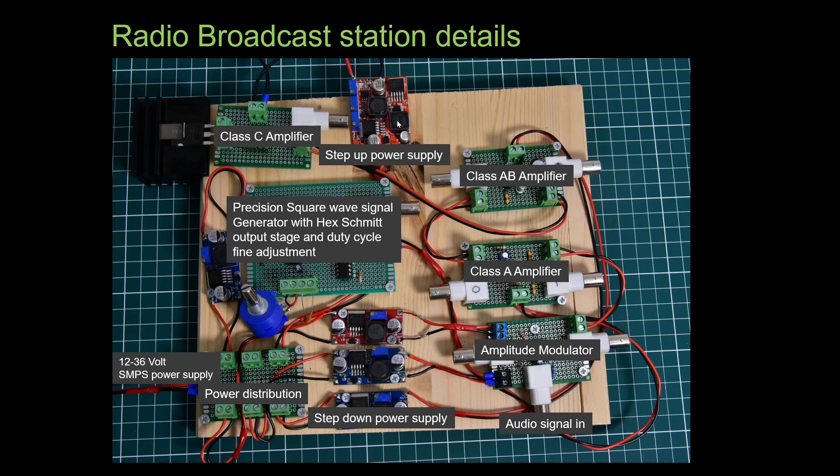The core of the radio station, the amplitude modulator, modulates the carrier wave's amplitude with the audio signal, producing the sound received by a radio.